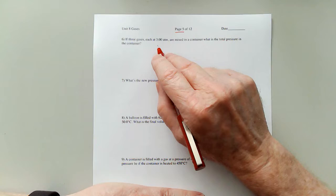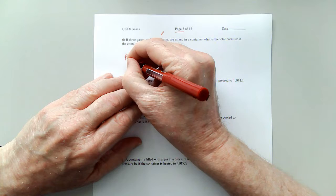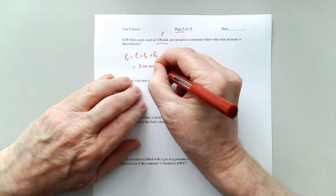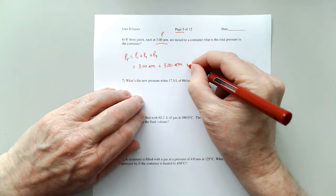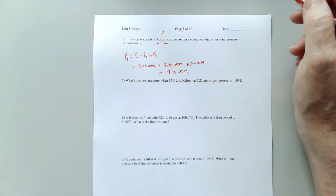In number 6, it says if three gases, each at 3.00 atmospheres pressure, are mixed in a container, what is the total pressure in the container? Well, we can just add those pressures together. P total equals the pressure of gas 1 plus the pressure of gas 2 plus the pressure of gas 3, which is going to equal 3.00 atm plus 3.00 atm plus 3.00 atm, which equals 9.00 atm. Pretty straightforward there, an example of Dalton's Law.